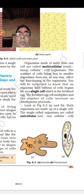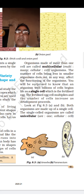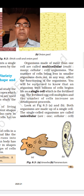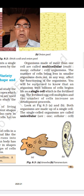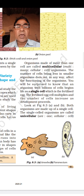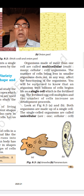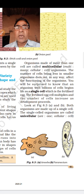Organisms made up of more than one cell are called multicellular. On the basis of the number of cells, organisms are divided into two groups: unicellular and multicellular. Organisms whose body has only one cell are known as unicellular organisms — like Amoeba, Paramecium, Euglena, and some bacteria.